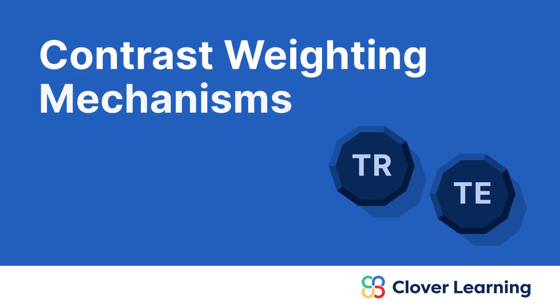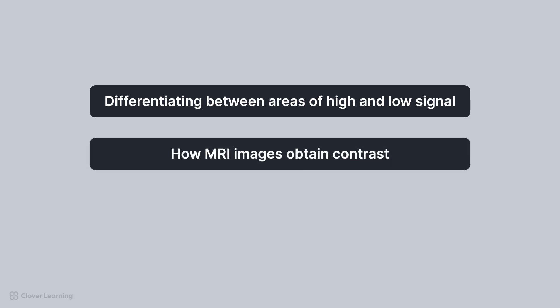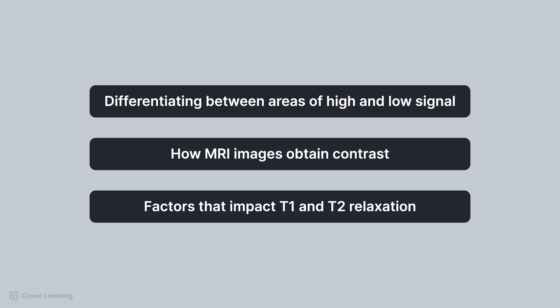Hey everybody! Welcome to today's lesson on MRI contrast principles. This lesson will discuss how to differentiate between areas of high and low signal, how MRI images obtain contrast, and the factors that impact T1 and T2 relaxation. It is important to understand these concepts as they will inform the parameters used during MRI scans.